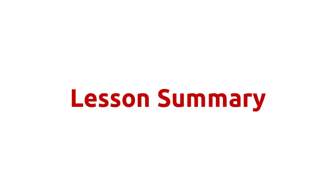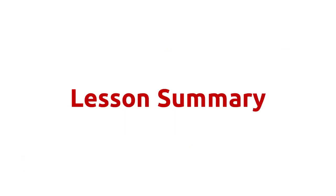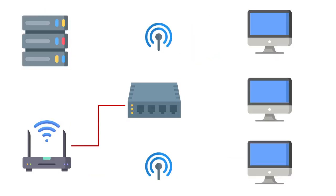In summary, networks aren't scary. A network infrastructure usually has a server, clients, switch, cable, network interface, router, and firewall. However, wireless networks replace cables with a wireless access point and radio signals.